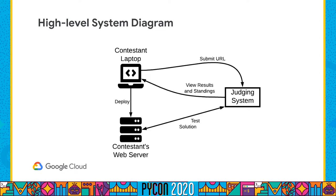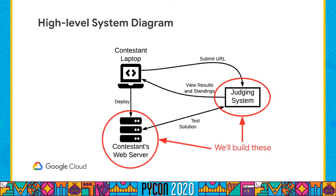Looking at a high-level system diagram: the contestant works on their own laptop, deploys their solution to their own web server giving them a URL available on the internet, submits that URL to the judging system through a web form, and the judging system talks to that web server, does all the necessary testing, and updates its standings and scores. The contestant can at any point view the standings page to see the status of all their submissions relative to everybody else. We're going to build the contestant solution first — the smallest, easiest part — then the bigger judging system.